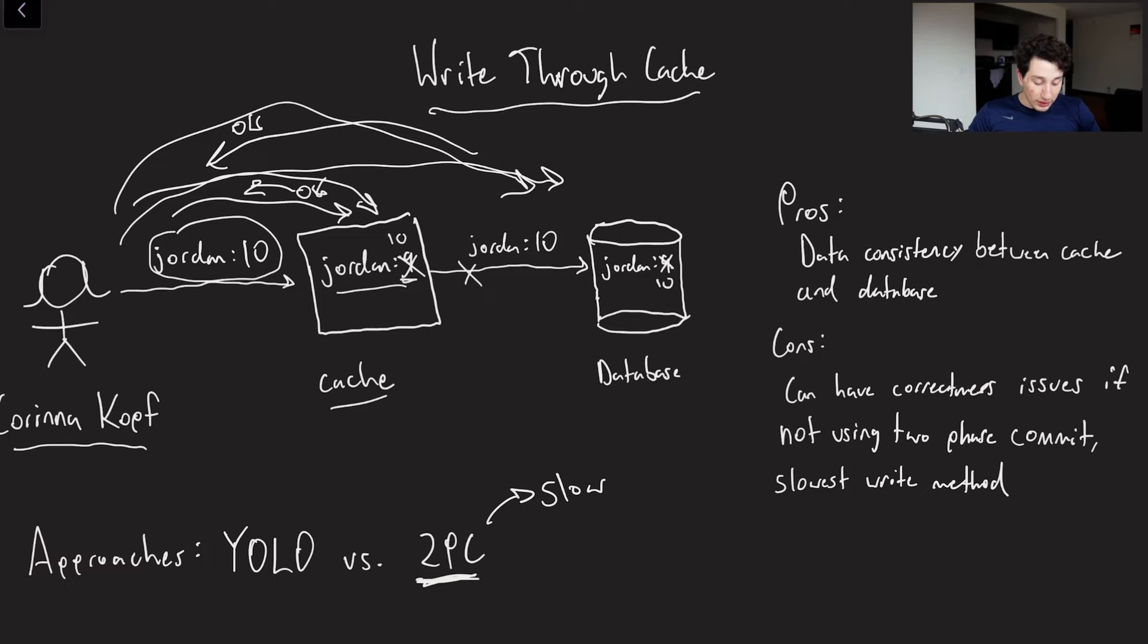Now, that being said, with the write-through cache, you, of course, can always take the YOLO approach, because sometimes you just don't need to have super consistent data. It's nice when you do mostly have that, because most of the time will be fine, but you do open yourself up to the occasional fault where you would be in trouble.